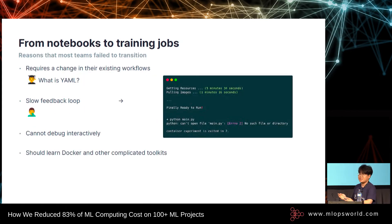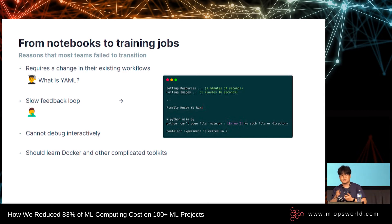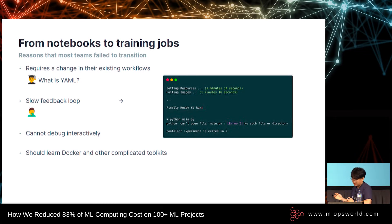But it's very hard. I've seen many teams that fail to make a transition from a notebook to a training job. There are many reasons, but the first reason is that they have to change their existing workflow. Normally, most ML engineers train their models by simply pressing the run button on the notebook or running commands like Python train.py. But to use training jobs, they are required to write a bunch of lines of YAML. That's the first reason most teams fail to transition.